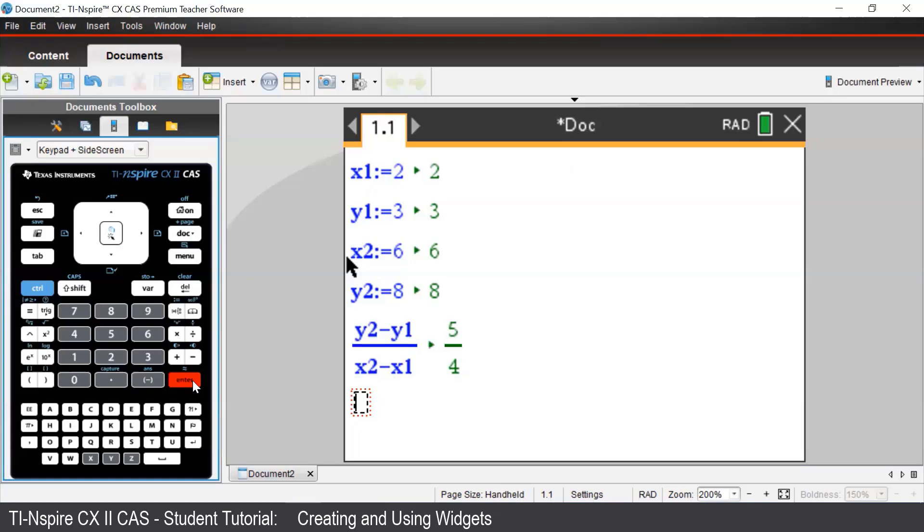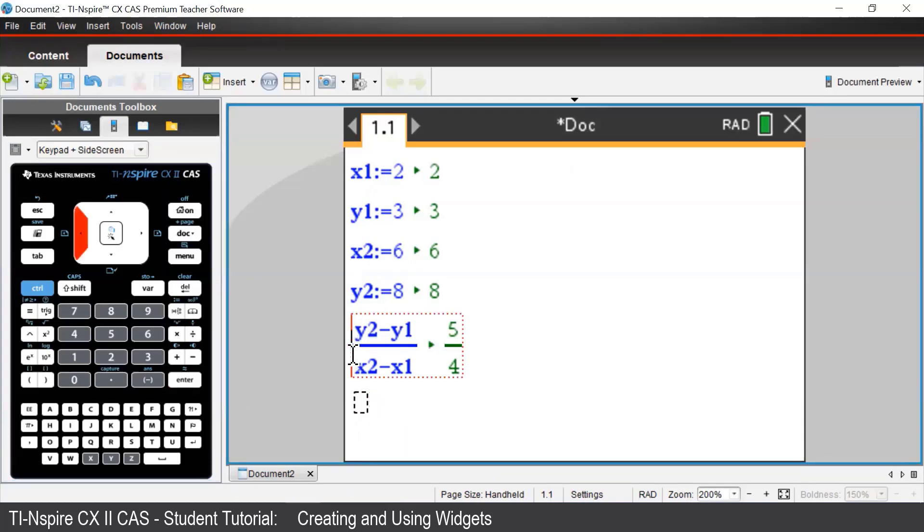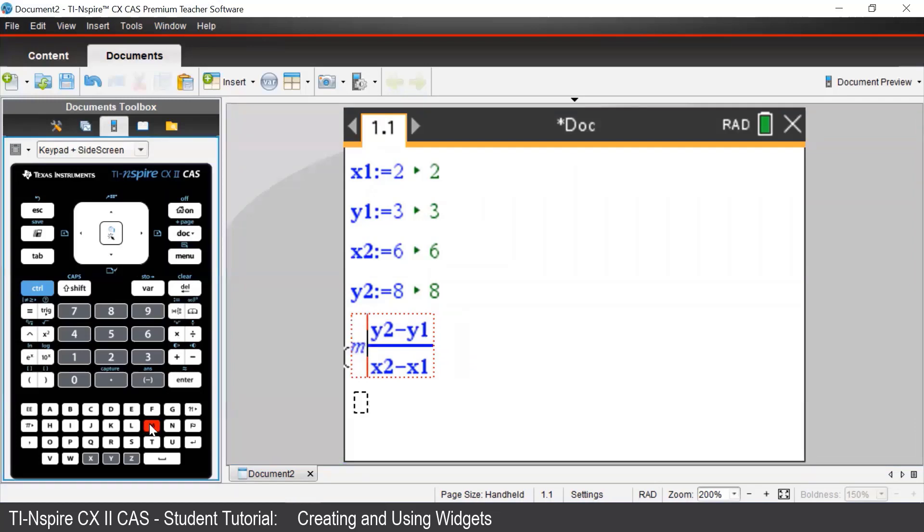If we want to use the gradient in another calculation it would be a good idea to store that value. We'll assign m to be the value of the gradient. So to assign m we need m and insert the assign command and press enter.